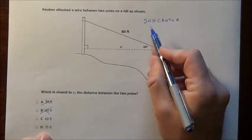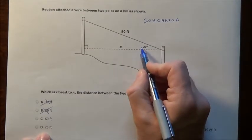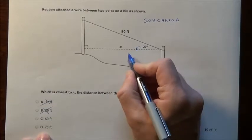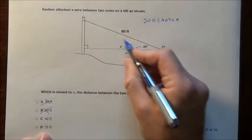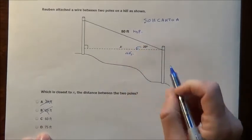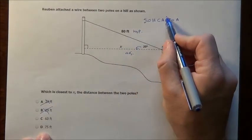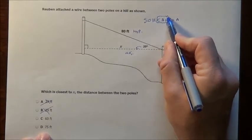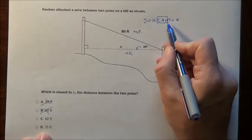Opposite over hypotenuse. Well let's see what we have. If I have 20 degrees, this piece right here is my adjacent side and this right here across from the right angle is your hypotenuse. So adjacent hypotenuse we know is the cosine, cosine is adjacent divided by hypotenuse.